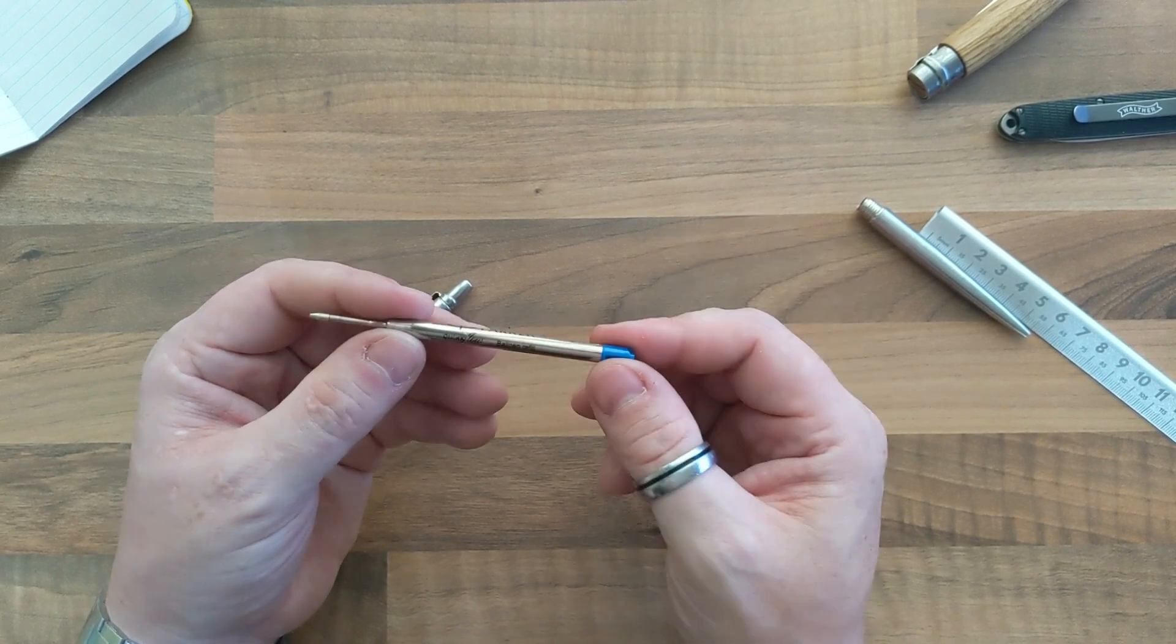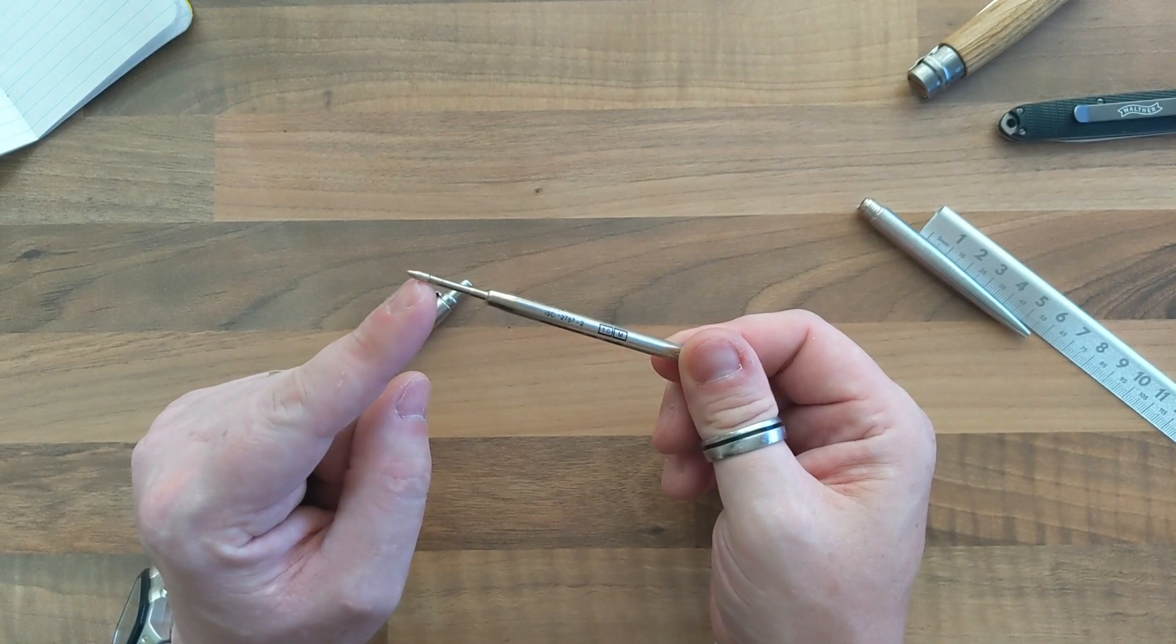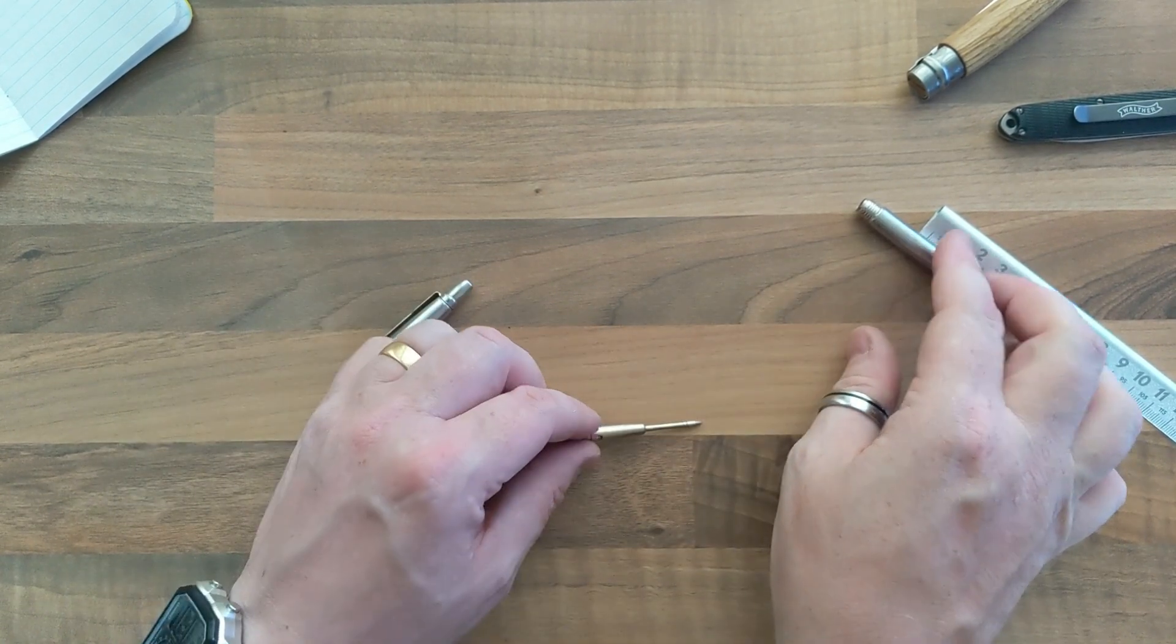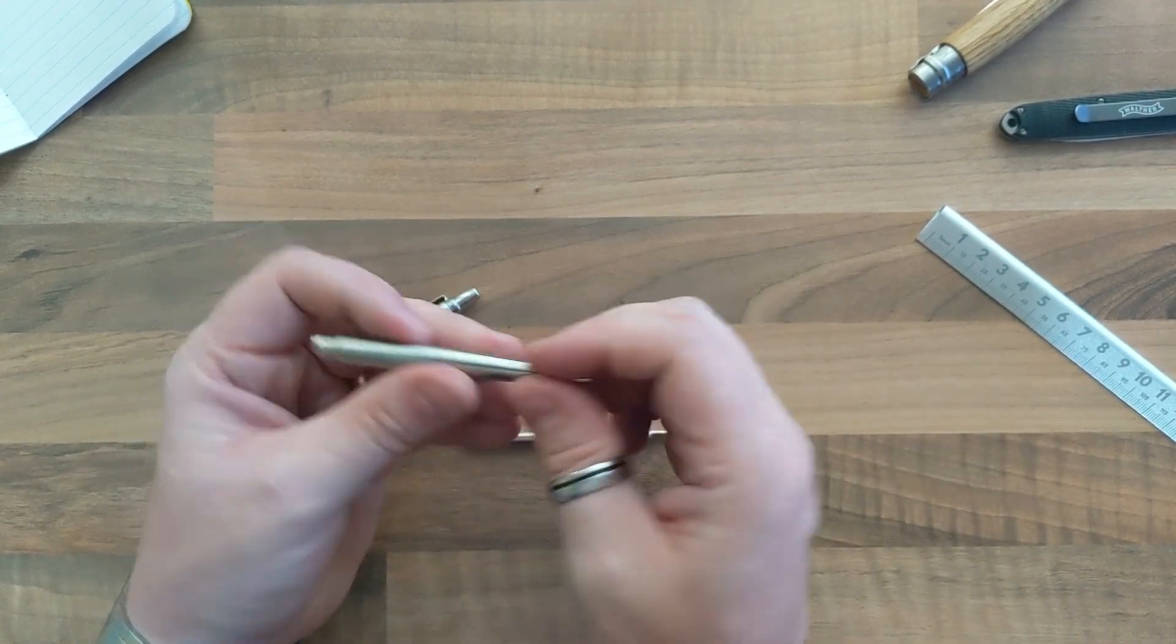This is the medium end. You can get a finer end with a smaller ball on the end.